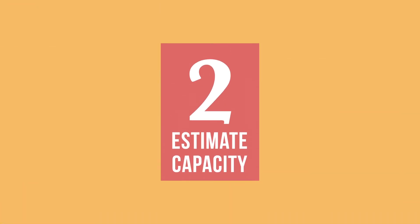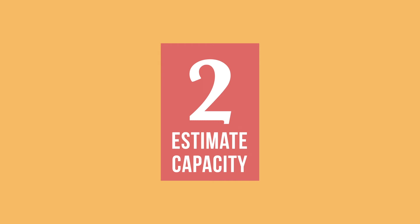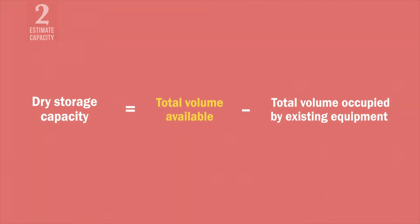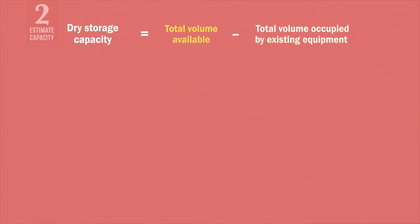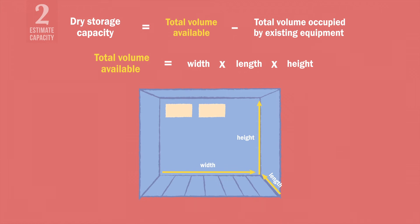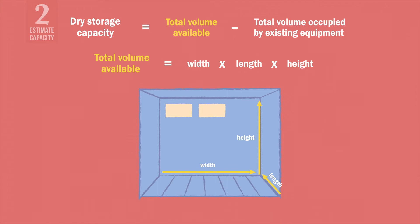Next, estimate how much dry storage capacity you have available. You will need to determine the total volume in cubic meters available in each storeroom. Then, you will subtract the total volume already occupied by existing equipment. To determine the total volume of a storeroom, multiply its width, length, and height.